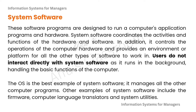System softwares are programs designed to run on a computer's hardware. System software coordinates the activities and functions of the hardware and software, controls the operations of the computer hardware, and provides an environment or platform for all other types of software to work in. Users do not interact directly with system software because it runs in the background — examples include Windows, Linux, Unix, and Mac OS.